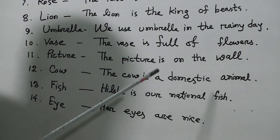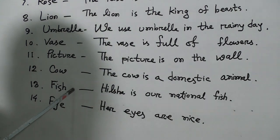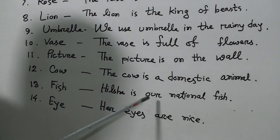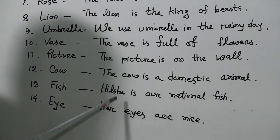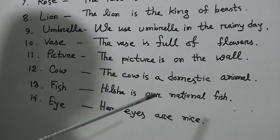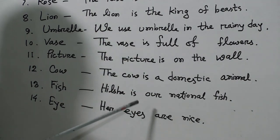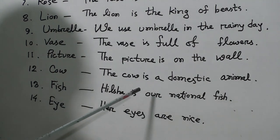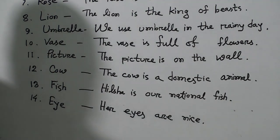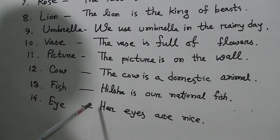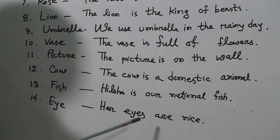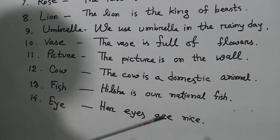Fish. Fish māne hauché māch. Hilsha is our national fish. Hilsha hauché āmadèr jatiyo māchir nama. Eye. Eye māne hauché chokh. Her eyes are nice. Taur chokh dhekhté shundar.